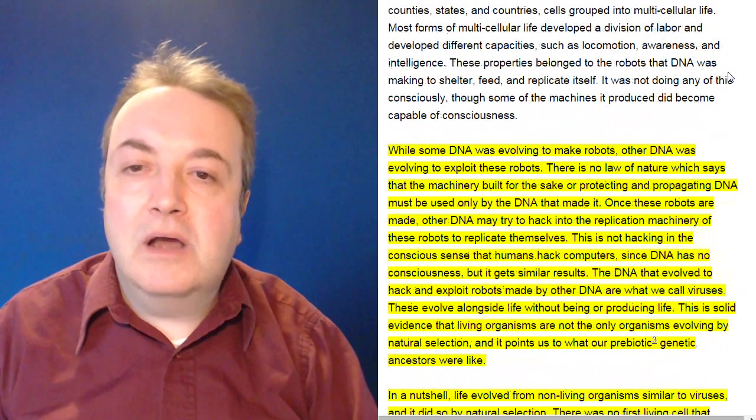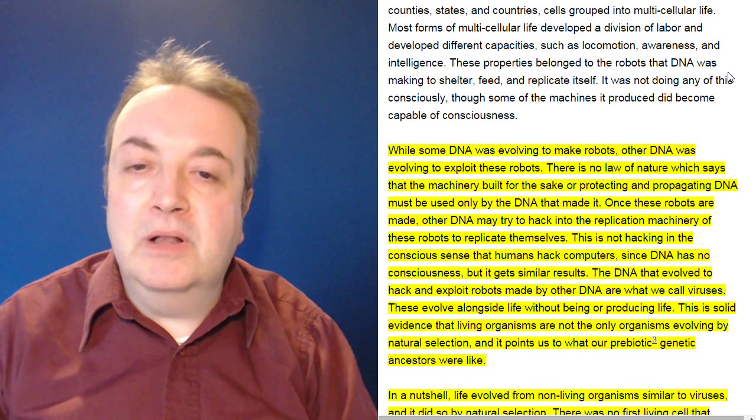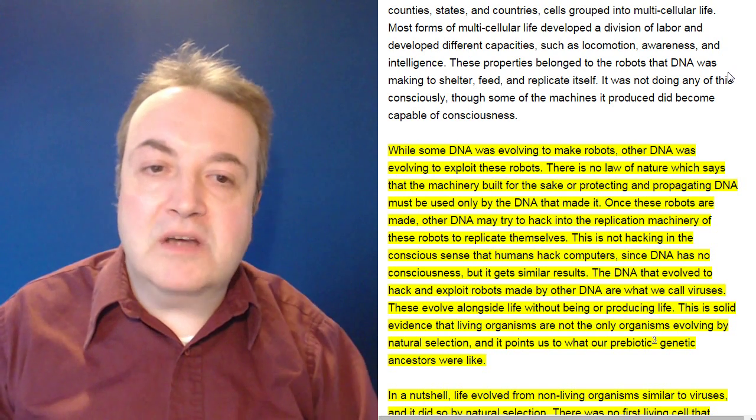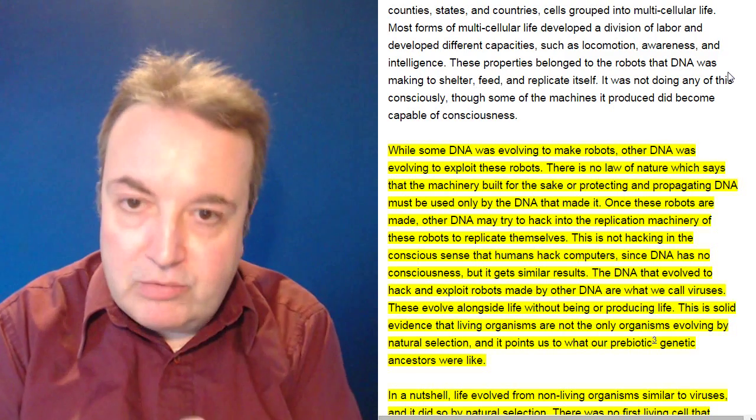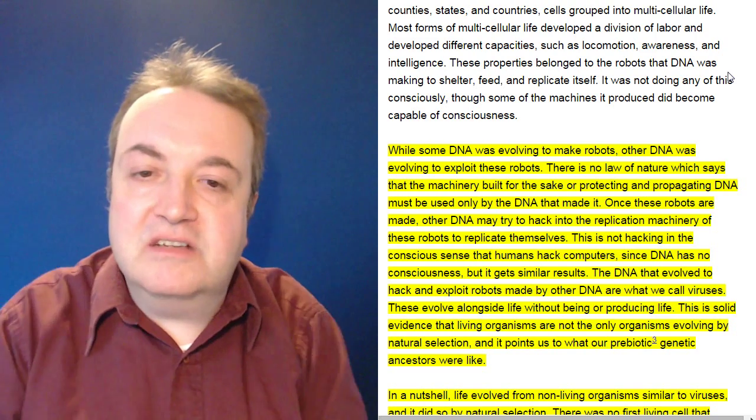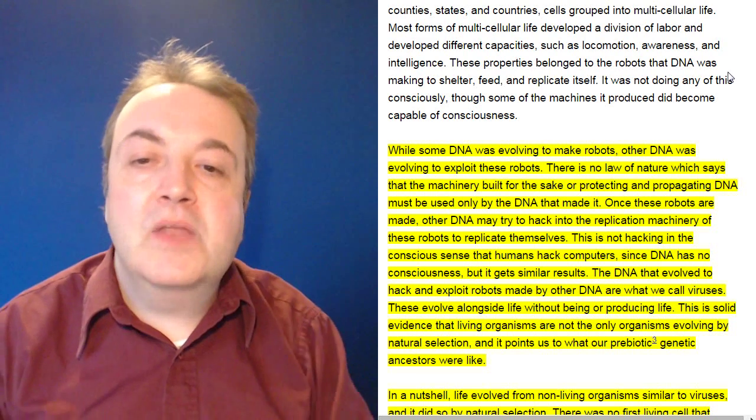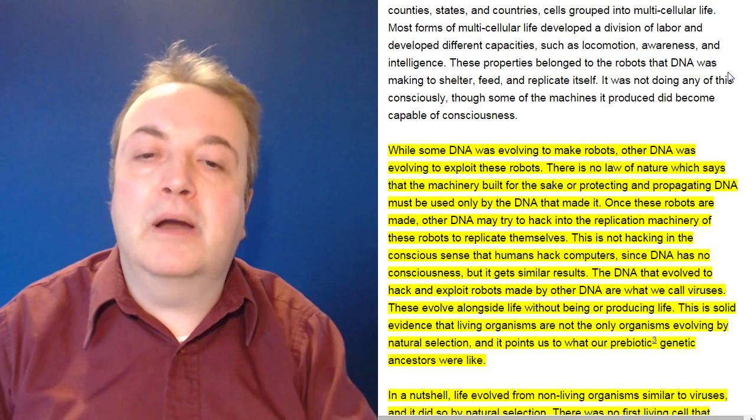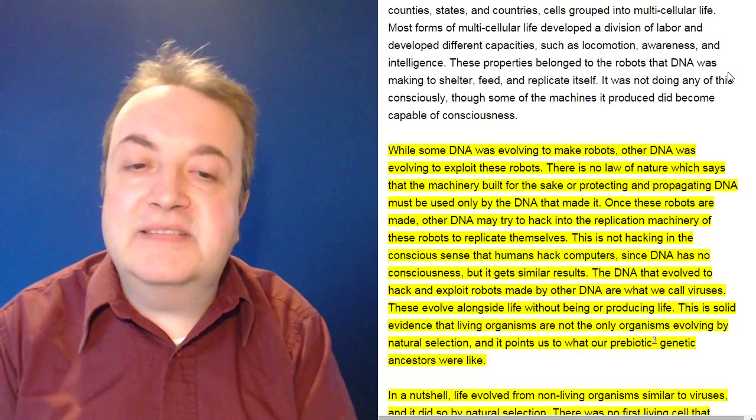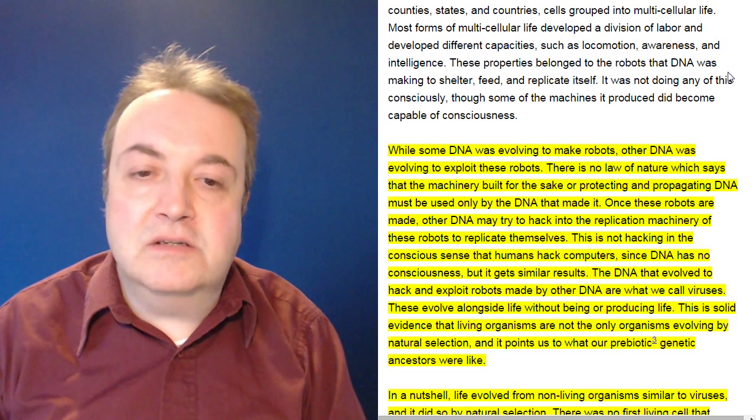While some DNA was evolving to make robots, other DNA was evolving to exploit these robots. There is no law of nature which says that the machinery built for the sake of protecting and propagating DNA must be used only by the DNA that made it. Once these robots are made, other DNA may try to hack into the replication machinery of these robots to replicate themselves. This is not hacking in the conscious sense that humans hack computers, since DNA has no consciousness, but it gets similar results. The DNA that evolved to hack and exploit robots made by other DNA are what we call viruses. These evolved alongside life without being or producing life. This is solid evidence that living organisms are not the only organisms evolving by natural selection, and it points to what our prebiotic genetic ancestors were like.